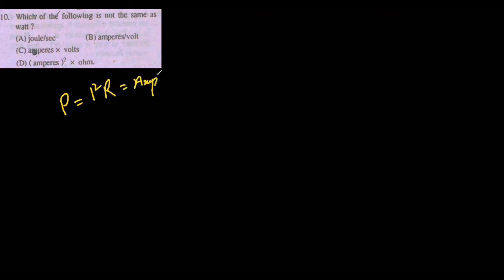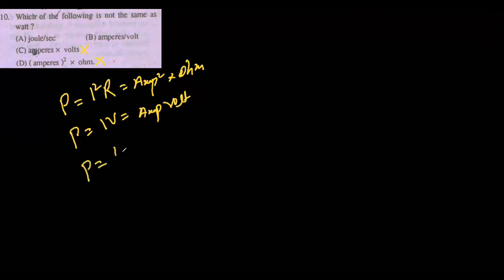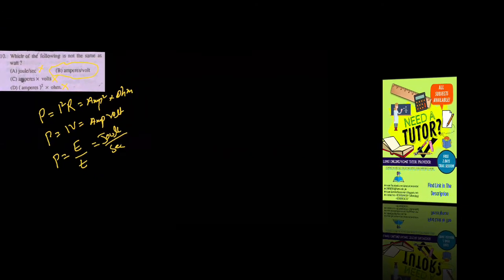Next MCQ: which of the following is NOT the same as watt? Watt is the unit of power P, and P = I²R = ampere² × ohm. Also P = IV = ampere × volt. And P = energy/time = joule per second. So 'ampere per volt' is NOT equal to watt. Option B is the correct answer.